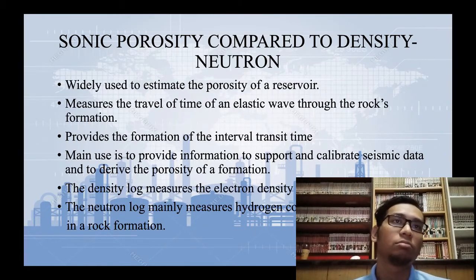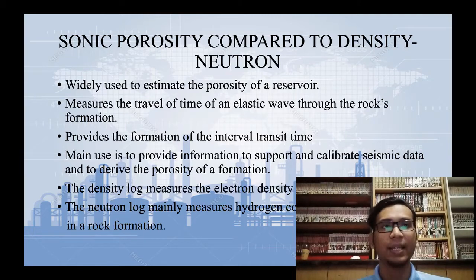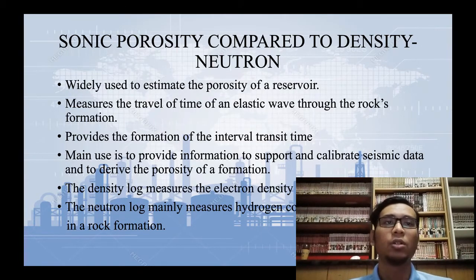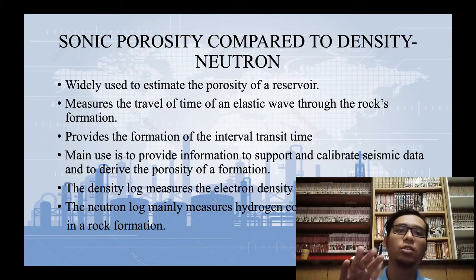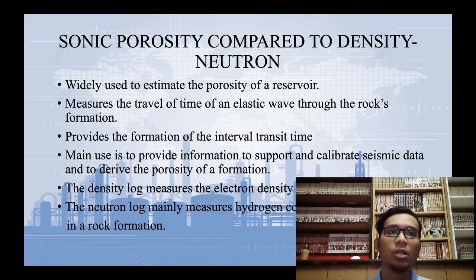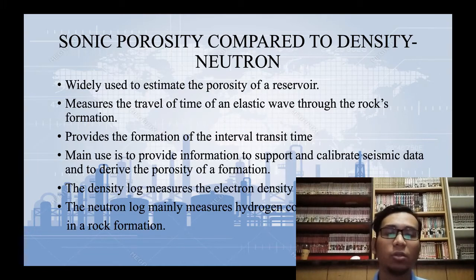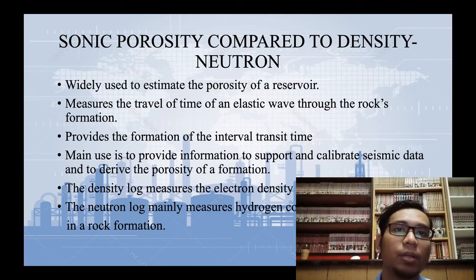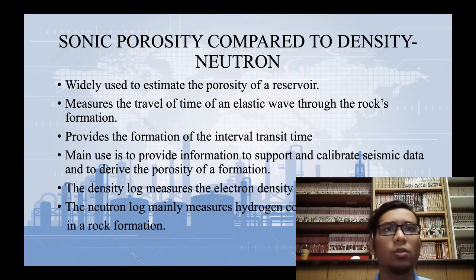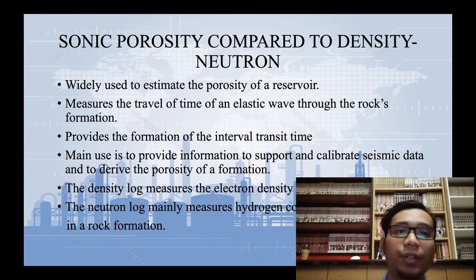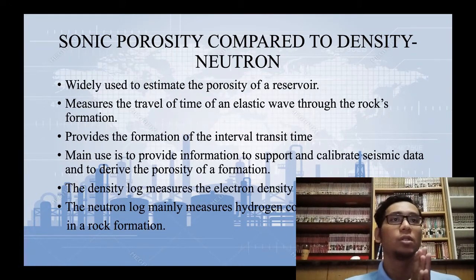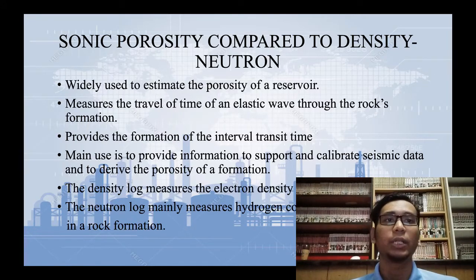The last method is the neutron log. The neutron log uses high energy neutrons emitted into the formation. The high energy neutrons will slow down if a hydrocarbon formation is detected. The more the neutron energy loss, the higher the concentration of hydrocarbons. Using the sonic log, you can measure rock type and the speed of sound. Using the density log, you can measure rock type and the density of the reservoir. Using the neutron log, you can measure rock type.